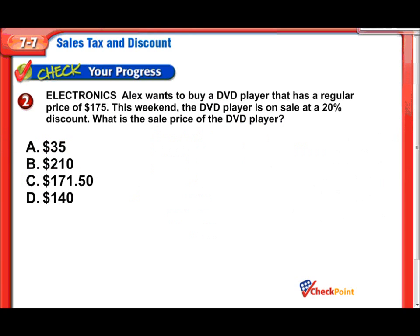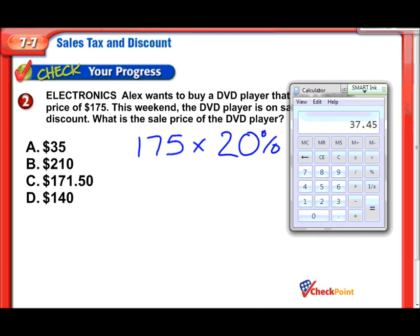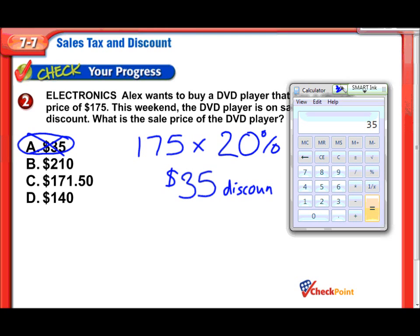Alex wants to buy a DVD player that has a regular price of $175. This weekend, the DVD player is on sale at a 20% discount. What's the sale price of the DVD player? Let's use that first method. You take the $175 and multiply it by the discount they're giving us, which is 20%. That's going to get us the discount — $175 times 0.2. Now, notice there is an answer choice with $35, but that's just the discount, not the sale price.